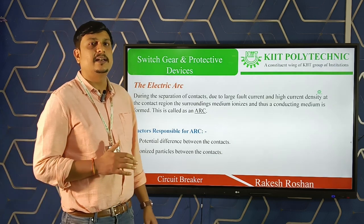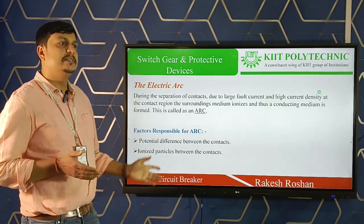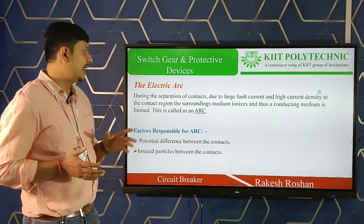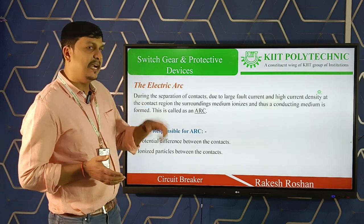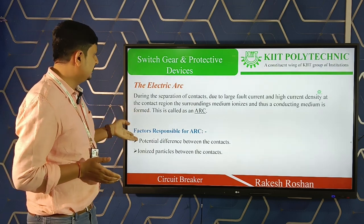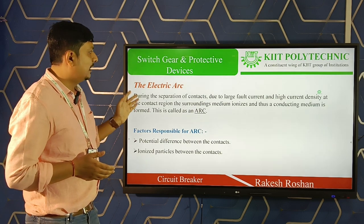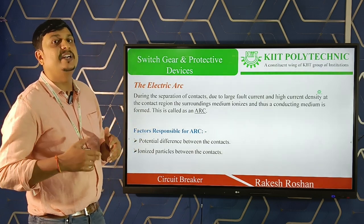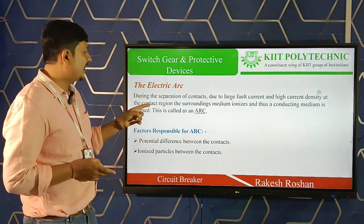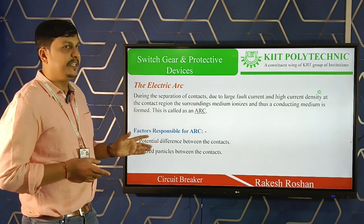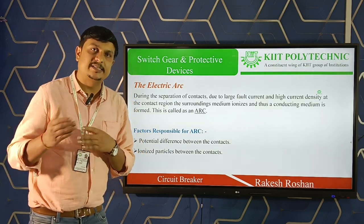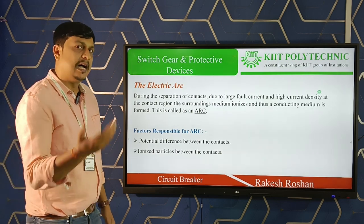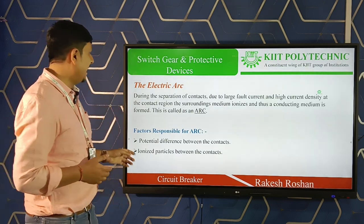Arc is a very important concern in circuit breakers. Whenever a fault occurs and the fixed contact is separated from the moving contact, a very large amount of arc is produced, so extinction of that arc is quite important. There are two basic parameters responsible for arc: the potential difference between the contacts, and the ionized particles between the contacts. If the potential difference is larger, the arc persists for a longer time; similarly, more ionized particles between the contacts means more arc is produced for a longer duration.